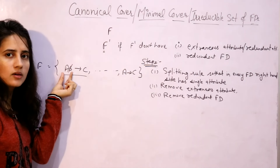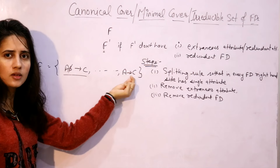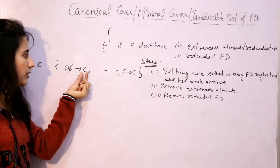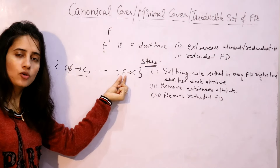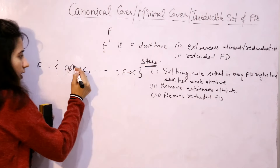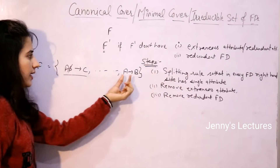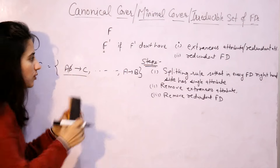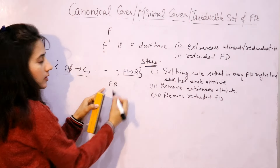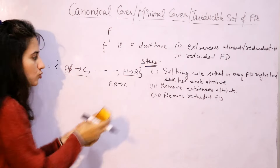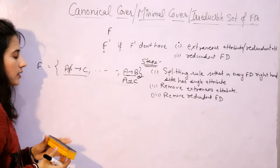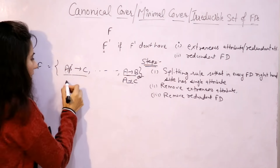If only A can derive C, what's the use of taking B? It's like hiring two people AB to do a task C, and A says 'I alone can do this task C' — then obviously you will not hire B. So B is extraneous. Similarly, if A → B is given, then B is also extra because using A you can derive B, then using AB you can derive C. So you can remove B from AB → C.